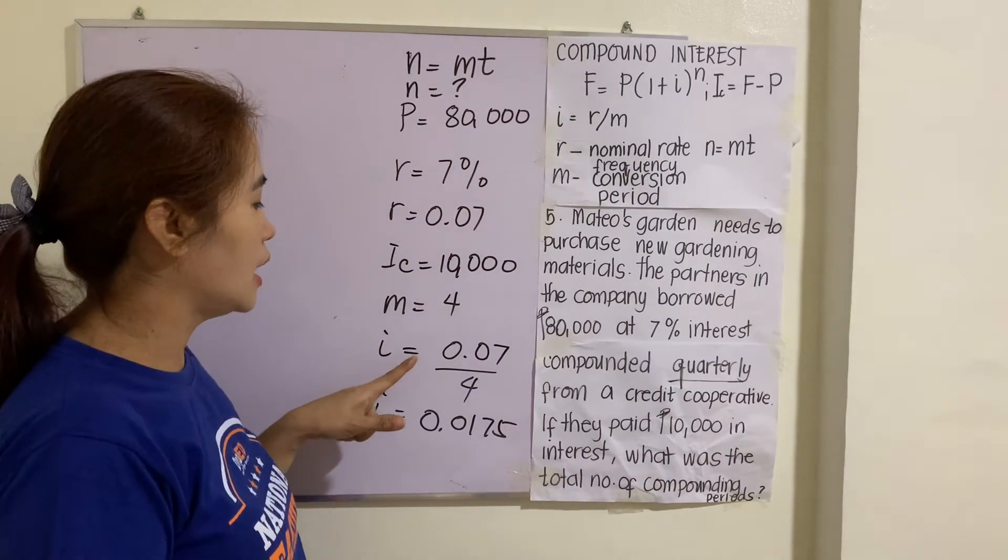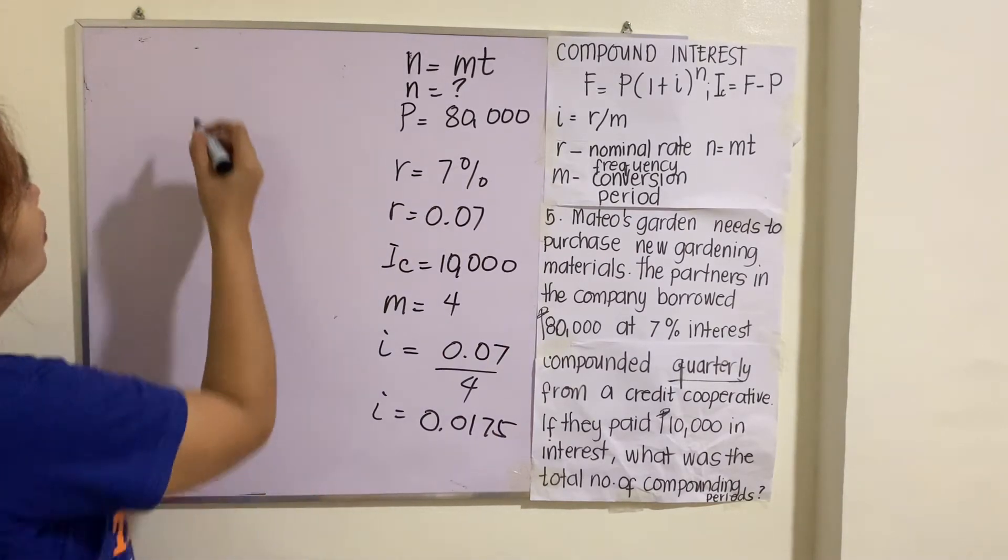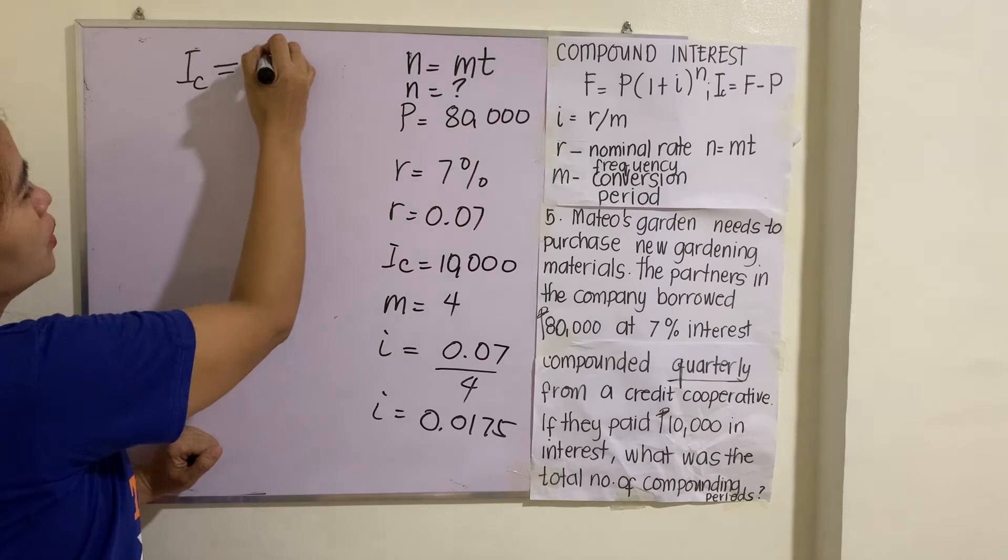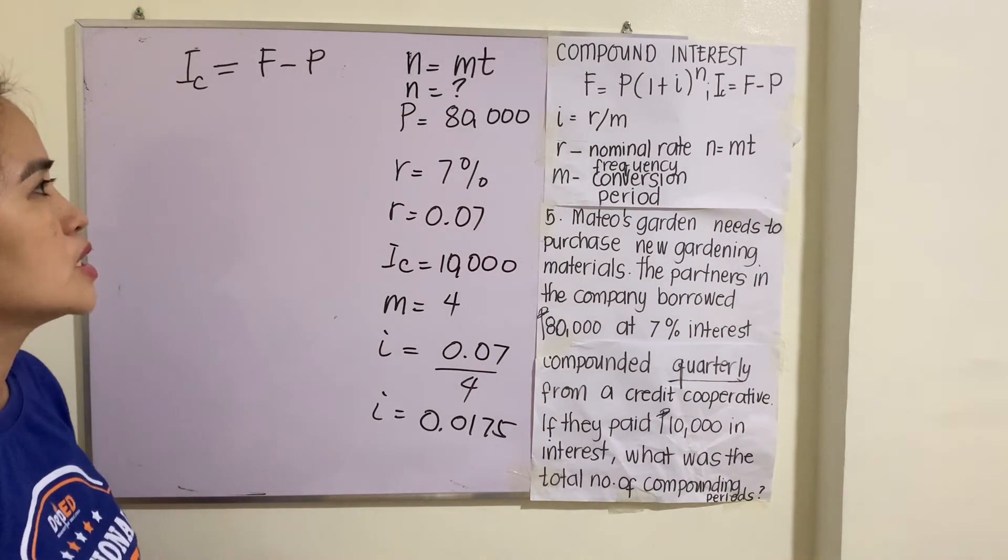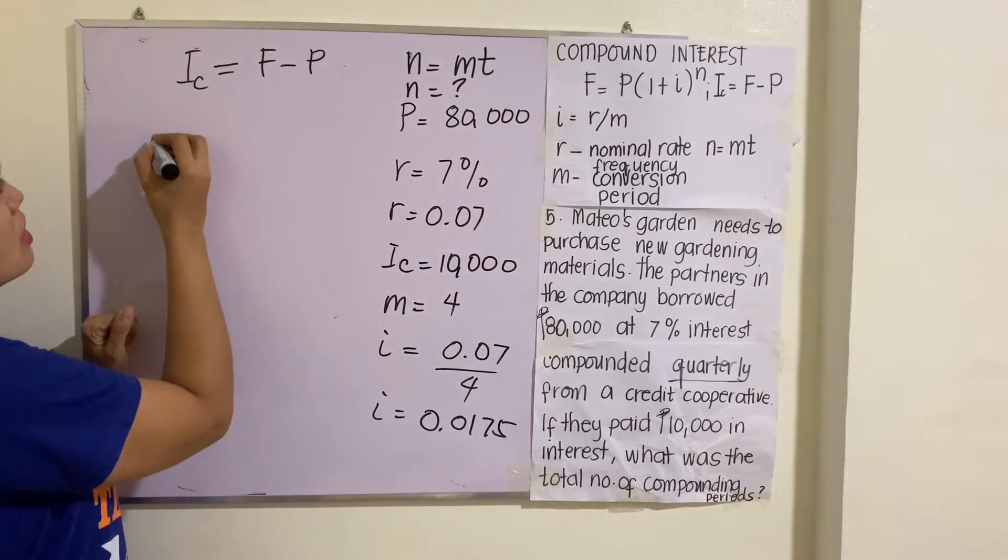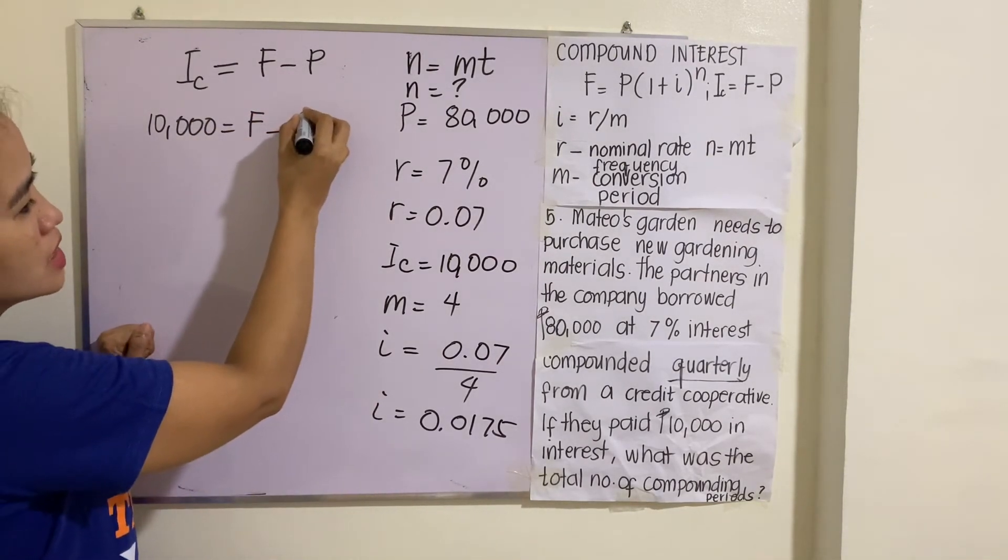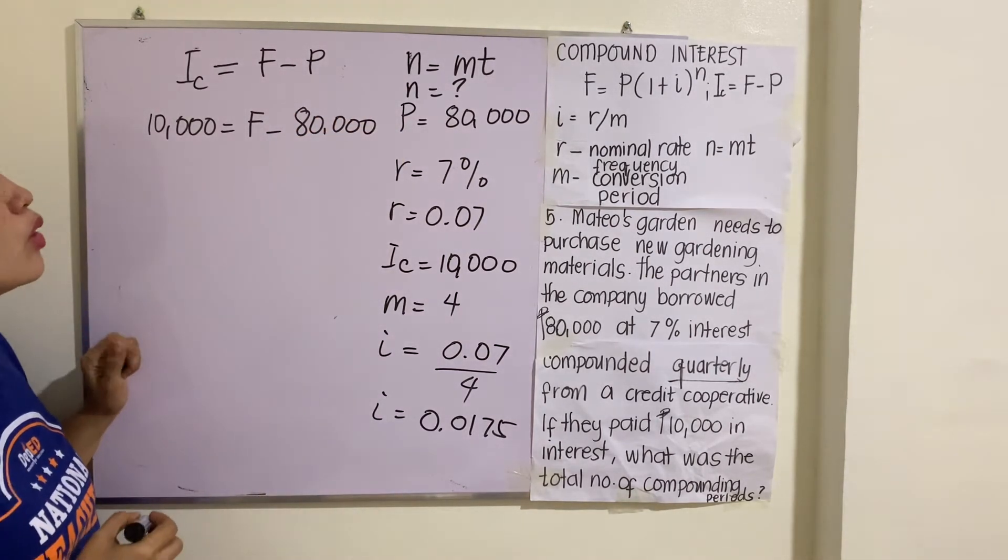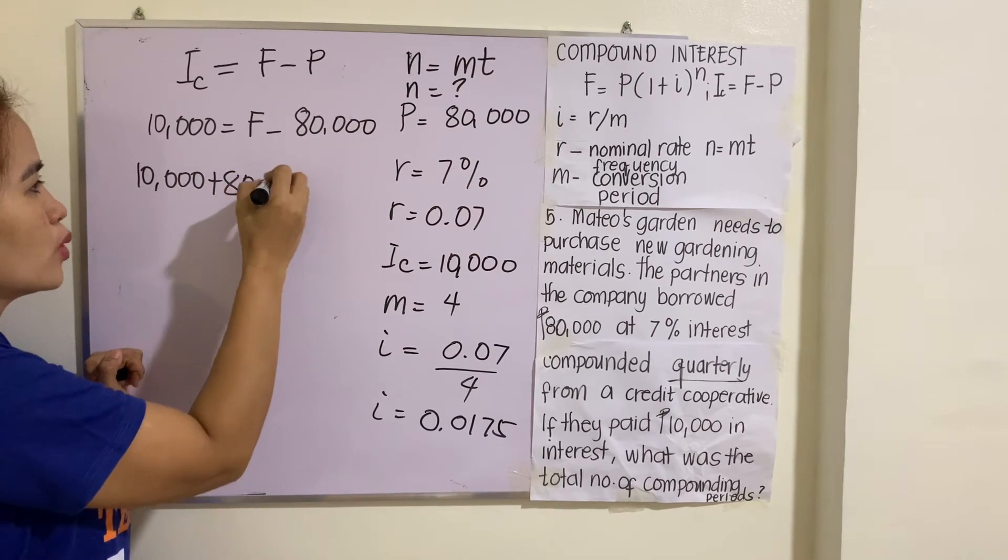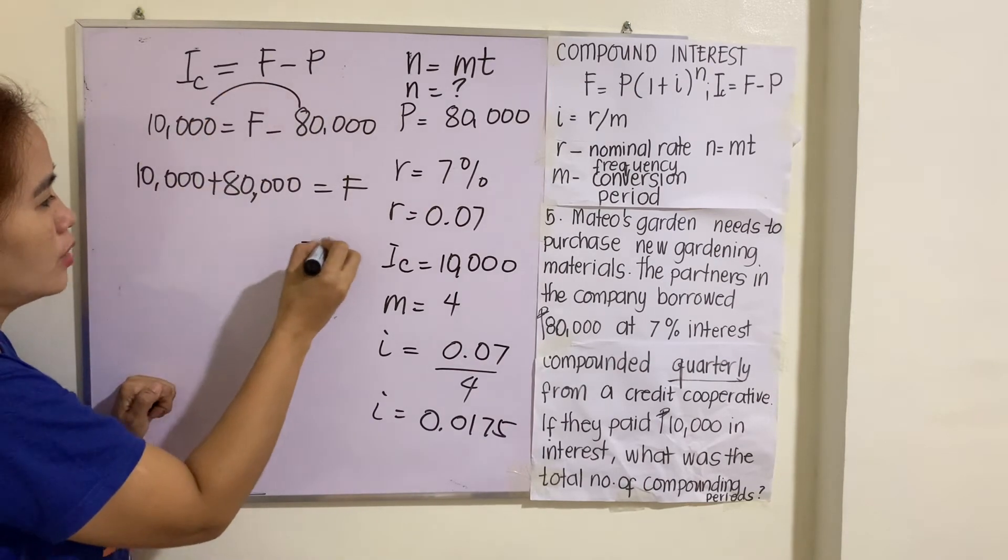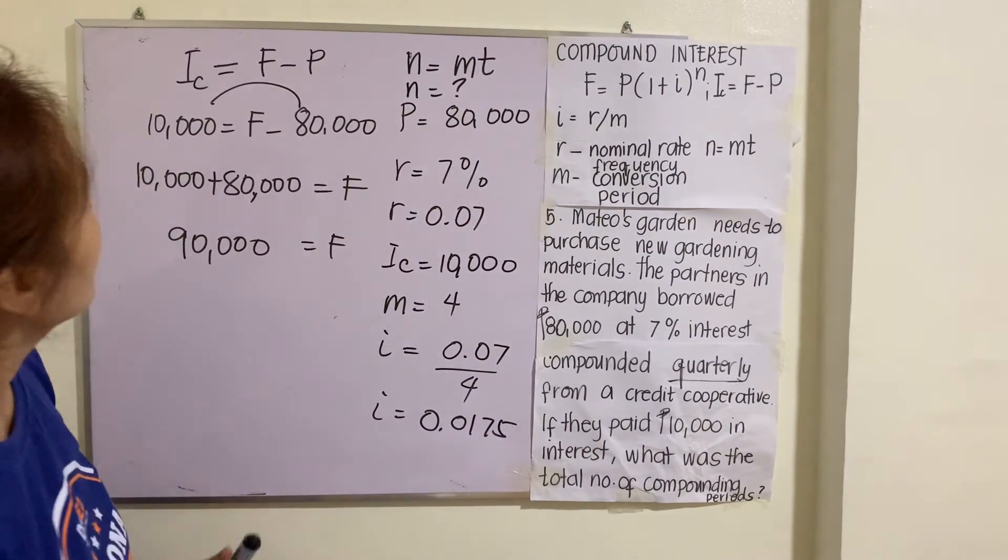And then your I = R/M = 0.07/4 = 0.0175. Now, you have I_c = F - P. We will be looking for the value of F first before applying this formula. So I_c = 10,000 = F - 80,000. How are we going to solve for F? That is 10,000 + 80,000 = F, so F = $90,000. So after this, I can now use this formula.